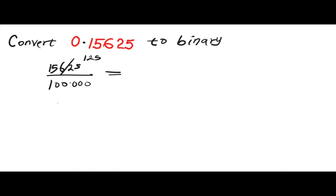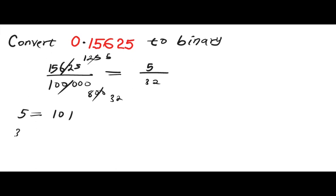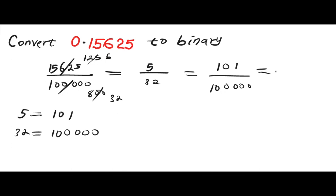We divide 15625 by 125 to get 125, and divide 100000 by 125 to get 800. Then 25 divides both: 125 divided by 25 is 5, and 800 divided by 25 is 32. So we have 5 over 32. The binary equivalent of 5 equals 101, and the binary equivalent of 32 equals 100000. So replacing 5 with 101, we have 101 divided by 100000, which gives us 0.00101. This is the binary equivalent of 0.15625.